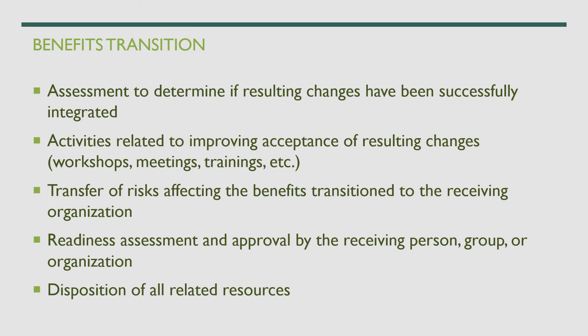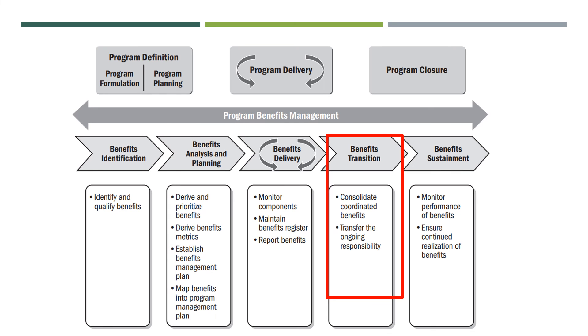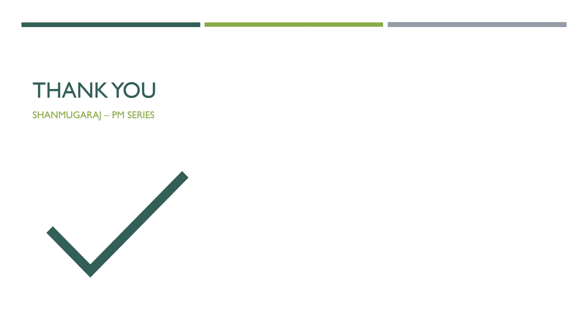Make the receiving organization ready — assessment and approval by the receiving party is very important. They must assess the deliverables and formally approve that they are taking over from you. The disposition of all related resources also occurs here: you can dissolve resources from the program or move some to support and operations. These are the activities involved in benefits transition. In summary, you consolidate and coordinate benefits, and transfer ongoing responsibility — including program ownership, risk, people involved, and resources.